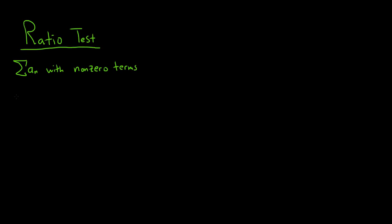And then we take the limit. So we let the limit as n goes to infinity of the absolute value of a sub n plus 1 over a sub n and we set this equal to L. And note that here L could be infinite. So there's three cases.